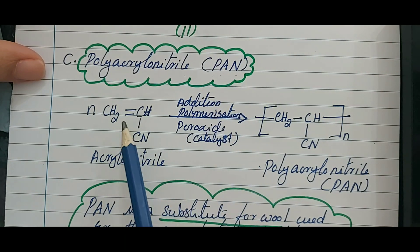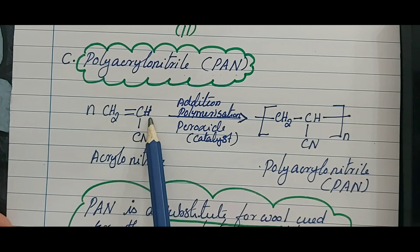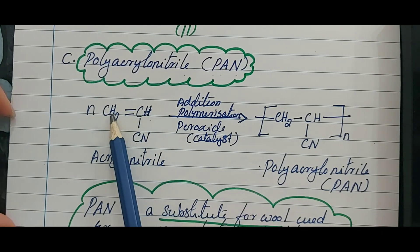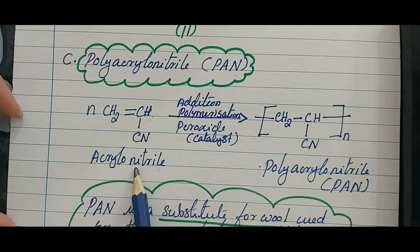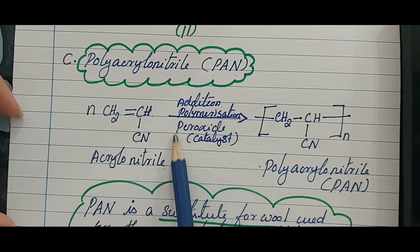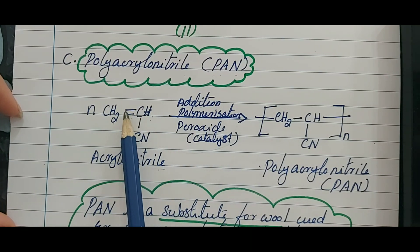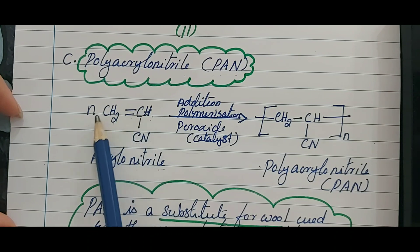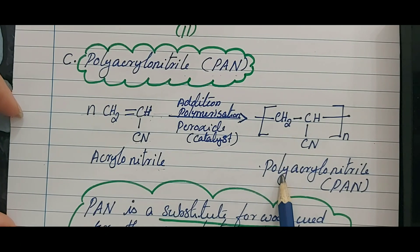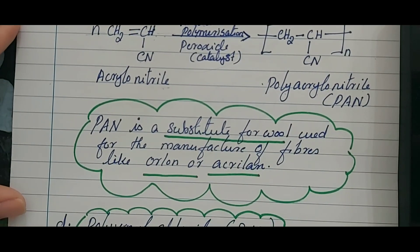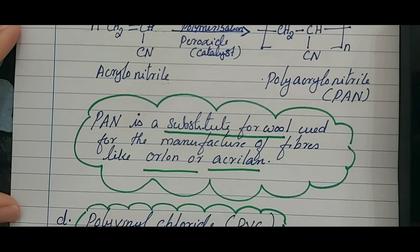The third addition polymer is polyacrylonitrile, generally called PAN. The monomer is acrylonitrile: CH₂=CH–CN. From ethene, one hydrogen is replaced by the functional group CN (cyanide; nitrile is the IUPAC name). In the presence of a peroxide catalyst, addition polymerization takes place — the pi bond breaks — giving polyacrylonitrile (PAN), which is a substitute for wool used to manufacture fibers like Orlon or Acrylan.